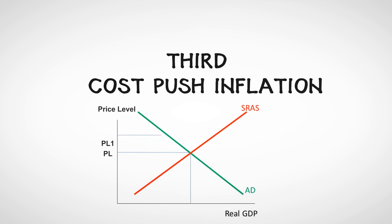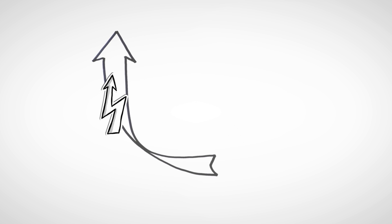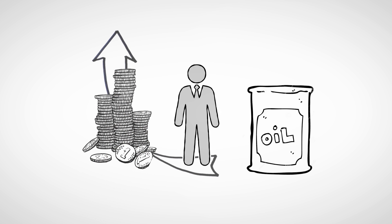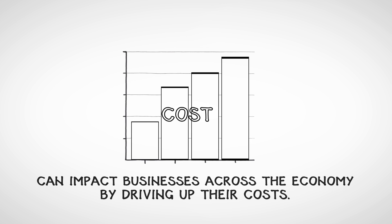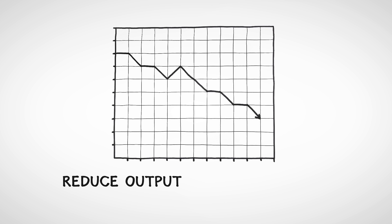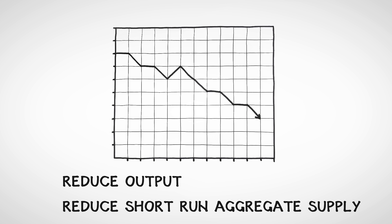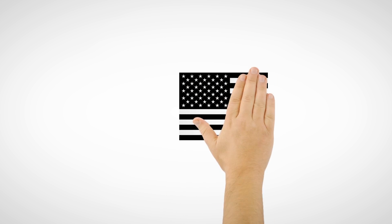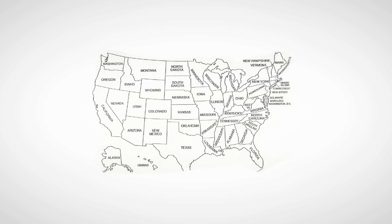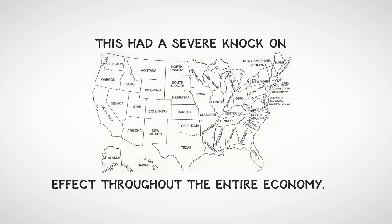Third is cost push inflation. Cost push inflation is the result of a rise in the price of inputs in production. An increase in the price of inputs, labor, or resources can impact businesses across the economy by driving up their costs. In turn, they reduce output and also reduce short-run aggregate supply. In the 1970s, the United States experienced an oil crisis in which oil prices suddenly shot up and impacted the production costs of businesses across the country. This had a severe knock-on effect throughout the entire economy.